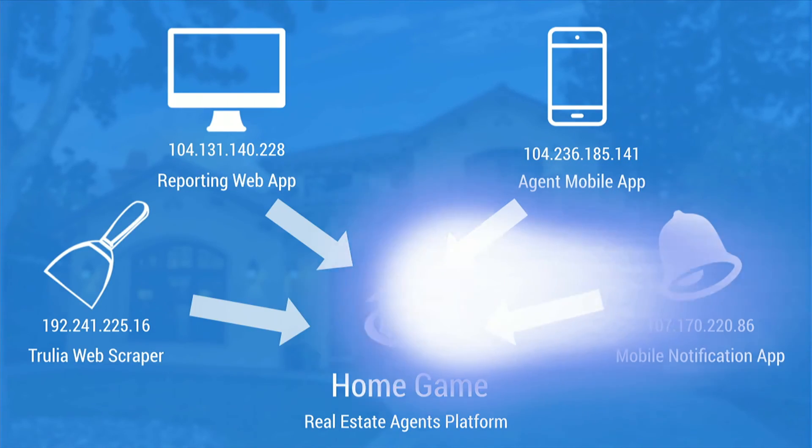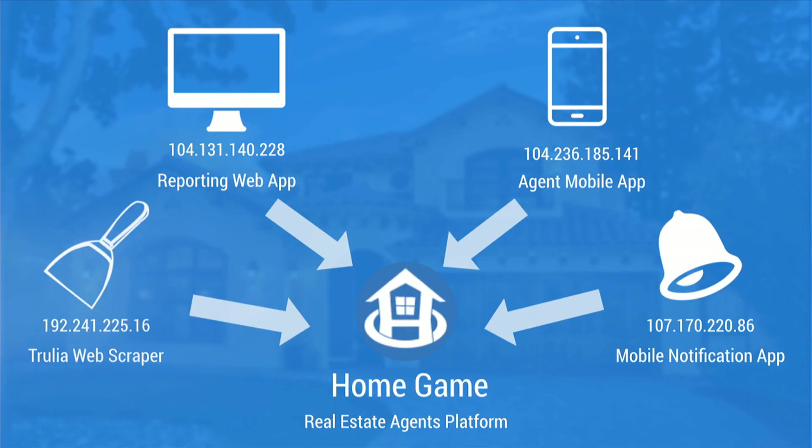Are you literally scraping Trulia or consuming their API? If you're scraping it, are you doing that all in JavaScript? Yes — there's a web scraper written in JavaScript that checks their website. Right now we only scrape San Francisco once a week. We don't use the API — the API is very restrictive. I haven't had to change the script since we started two months ago, and it's still working really well.